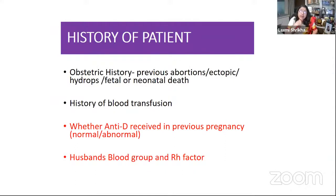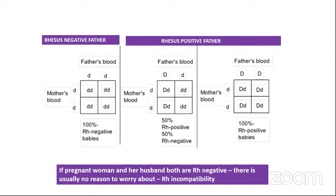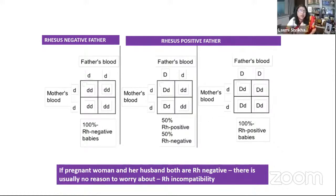When any RH negative mother comes to your OPD, first and foremost is taking the obstetric history in great detail — history of previous abortions, ectopics, hydrops, fetal or neonatal death, history of blood transfusion, whether she received anti-D in her prior pregnancy — and you should see that she has brought the husband's blood group and RH report. The husband's blood group makes a lot of difference. If husband is negative and wife is also negative, practically speaking you don't have to worry about that pregnancy. The problem starts when wife is negative and husband is positive.